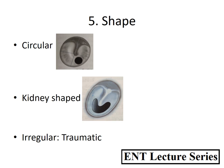Finally, the shape of the perforation. Most often it is circular or oval. Sometimes two oval or circular perforations coalesce to form a kidney-shaped perforation, as shown in the figure. In cases of trauma, the perforation will be of an irregular shape.